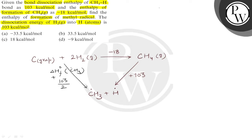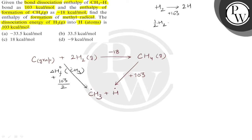हमको dissociation energy hydrogen gas के लिए दी हुई है। It turns into 2H by absorbing 103 kilocalorie. So, if we need only one H atom — only one H free radical has to be formed — we need 51.5 kilocalorie heat only. Now, we can use Hess's law here.